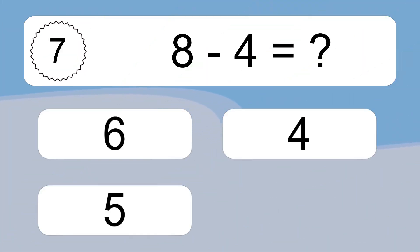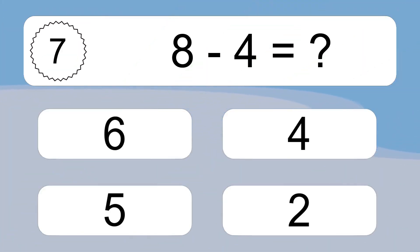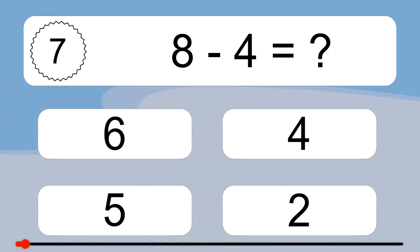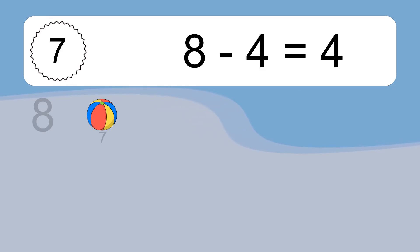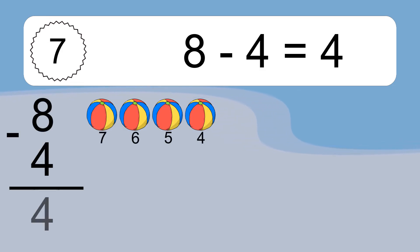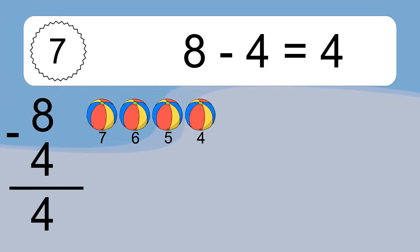8 minus 4 equals what? 8 minus 4 equals 4. Let's count it: 7, 6, 5, 4.